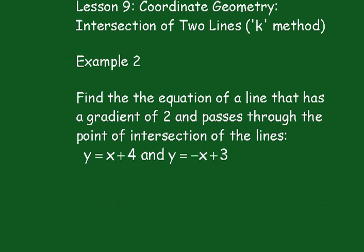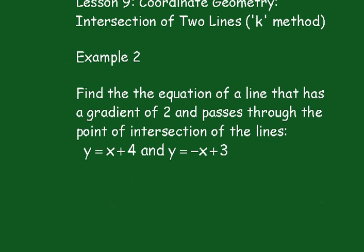There's no real advantage in using the K method here. We could solve these simultaneously, get what x and y are, and use the point gradient form of the line to work out the equation. We'll go through it and just show you how it works.